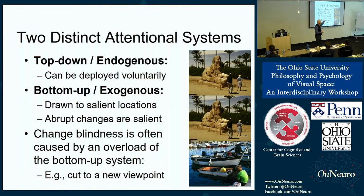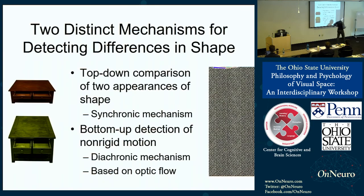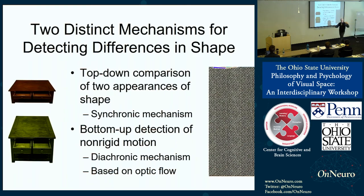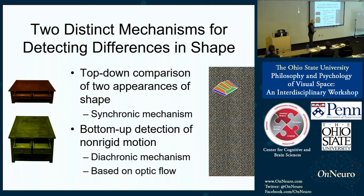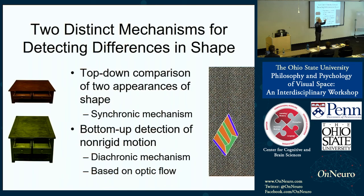There is another solution with a very similar abstract structure. We argue there are two distinct mechanisms for detecting differences in shape. On the one hand, there is top-down comparison — you look at one, look at the other, and compare. This is a synchronic mechanism; they have to be present together, or compared with memory, represented side by side. There is another way: a bottom-up diachronic mechanism based on optic flow. Things can stretch right in front of our eyes and could deform, so the visual system performs this analysis even with random dots.